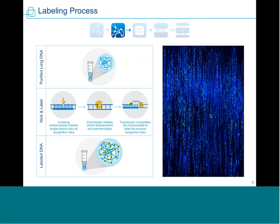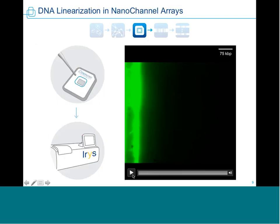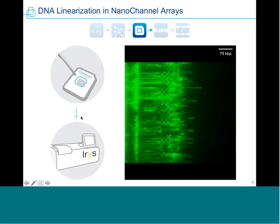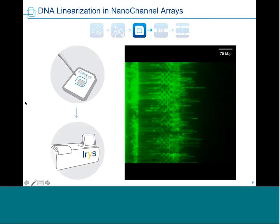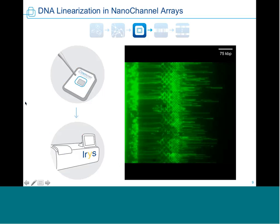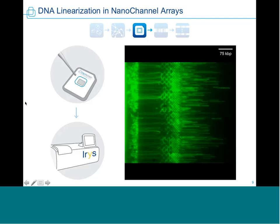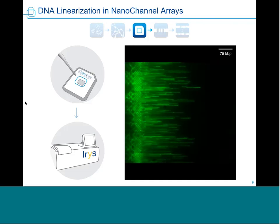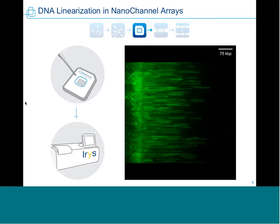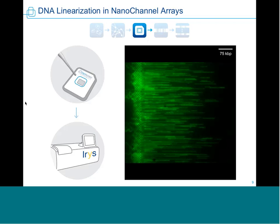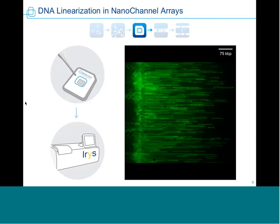Once images are taken, our software automatically identifies molecules and extracts them along with their labels — those nick sites — represented in digital form as vertical black bars. These molecules are fed into our de novo assembly algorithm, which performs pairwise comparison of every two molecules and grows a map together. Everything we do is de novo; we believe references are often wrong or incomplete, so building from scratch gives a better answer. Genome maps are always shown in blue and compared to a green reference — whether that's a human reference, next-gen sequencing data, or another genome map.